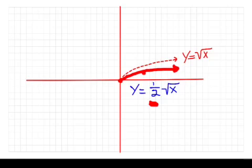So again, when we multiply by a fraction between 0 and 1, that is a vertical compression.